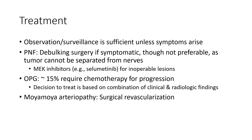Treatment: Observation and surveillance is sufficient unless symptoms arise. For plexiform neurofibromatosis, debulking surgery is performed if symptomatic, though not preferable since the tumor cannot be fully separated from the nerve. For optic pathway glioma, around 15% require chemotherapy for progression. Treatment decisions are based on a combination of clinical and radiological findings. Moyamoya arteriopathy may require surgical revascularization.